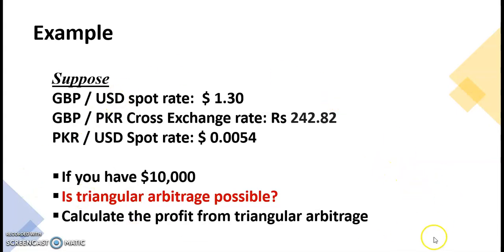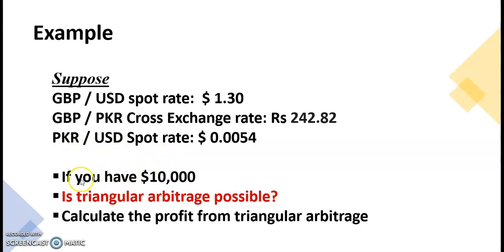So there we are with the problem: the data is available, we have the rates — we have the gross rate, we have the direct rate of the US dollar in pound and US dollar in Pakistani rupee. And now we have to see if triangular arbitrage is possible, with the condition that we have $10,000 available on hand.